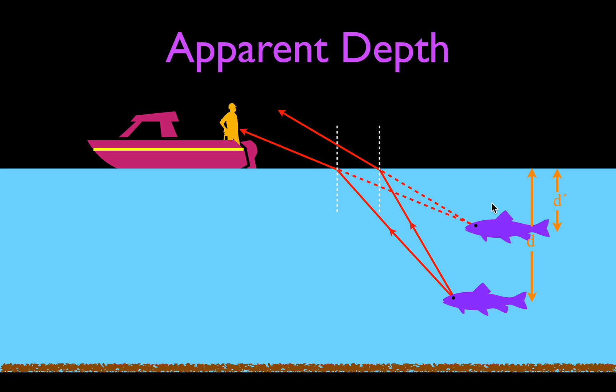In this case, because you're not standing directly above the fish, you can't use the apparent depth equation I showed earlier. It is still true that the apparent depth is less than the real depth, but the equation doesn't apply. In fact, a student once told me that when catfishing with a bow and arrow, to actually hit the fish you have to aim below where you see it — because you see the virtual image, but the real fish is deeper.